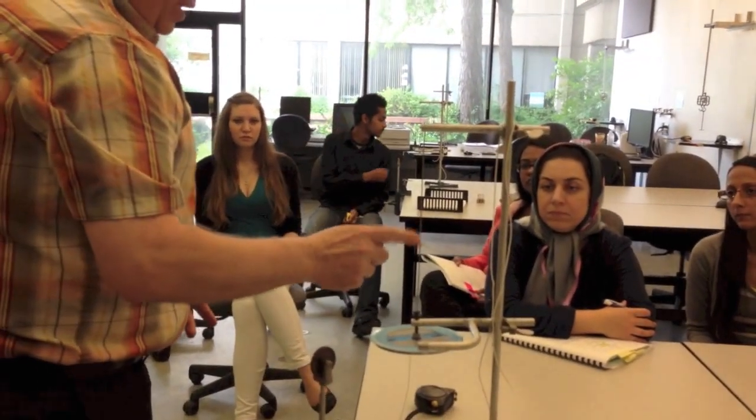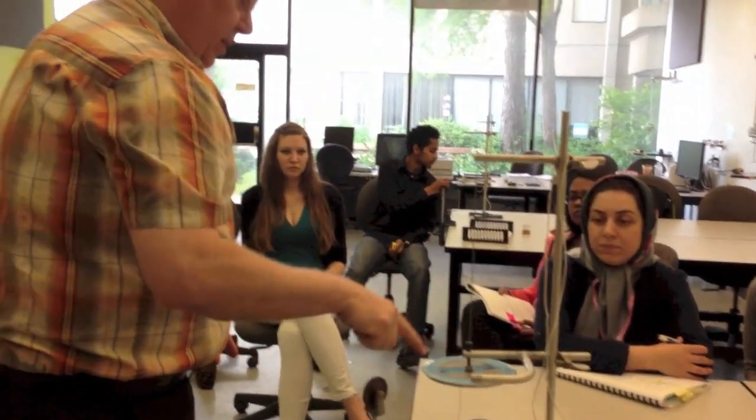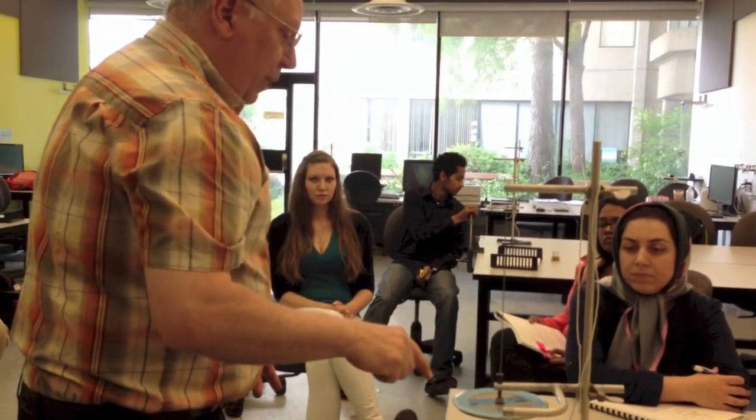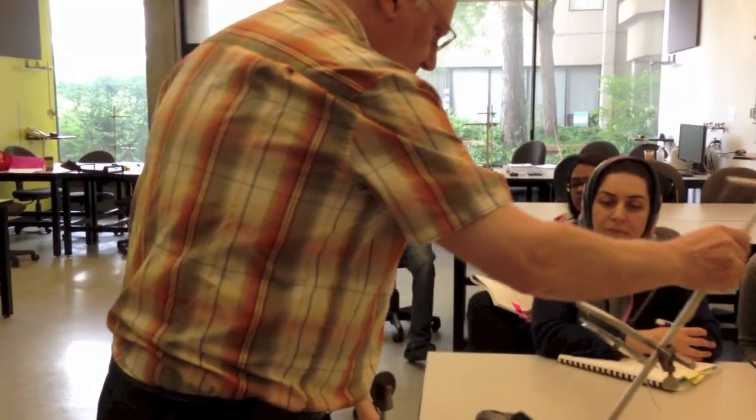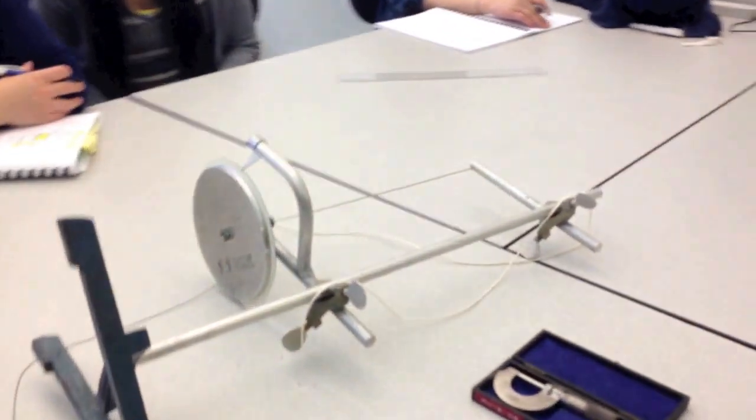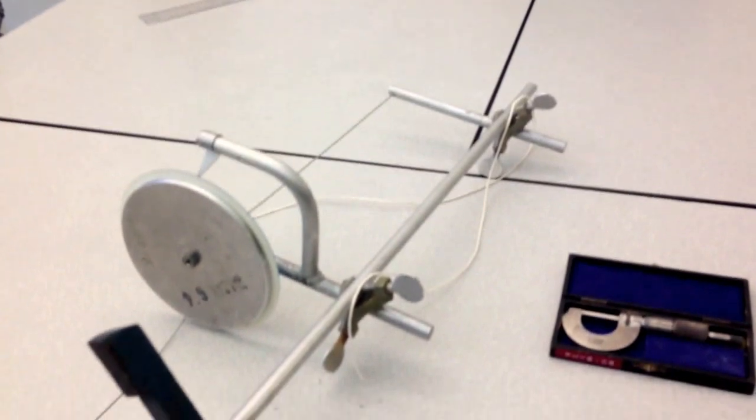Then I'll get to the thickness of the wire in a second. Let's say next we want to determine what the radius of this disc is. Well, if you notice, this disc is actually a little bit smaller than the diameter of the protractor.